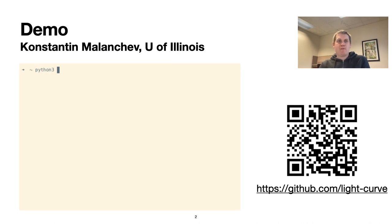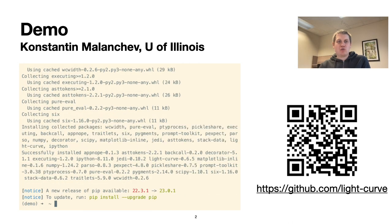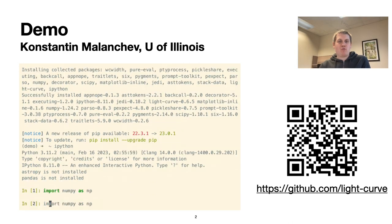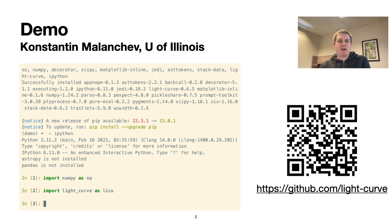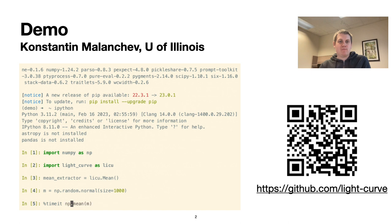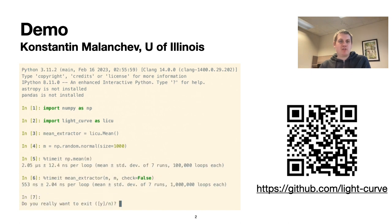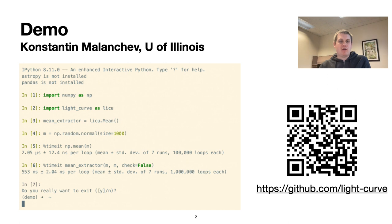Here I show a very basic example where I set up a virtual environment and install light-curve and IPython. IPython is not a dependency of the package, it's just a way to show you the performance of it. Here I compare the numpy mean function with the light-curve package mean feature extractor, and even for this very simple and basic example, the light-curve package is a few times faster than a naive Python implementation. Thank you.